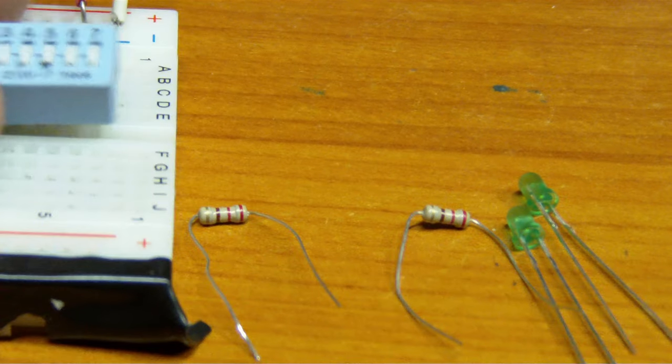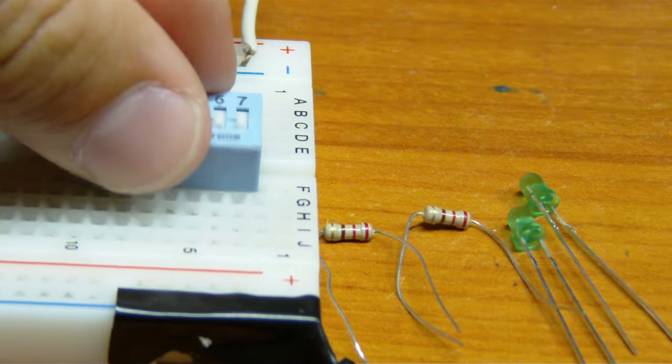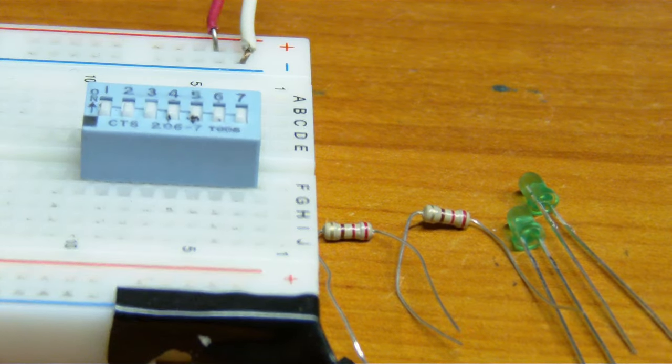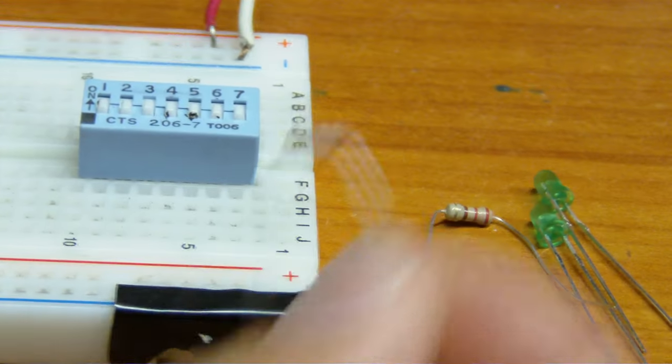The first thing you want to do is put the dip switch on the board. Alright, seated on the board, good. Make sure all your connections are good on the breadboard.